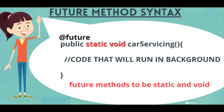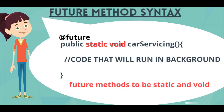You also need to define a future method with static void. All future methods have to be static void. Why void? Because as it runs in the future — meaning whenever resources are available — it cannot return any output to you at that point in time. That is the reason void is the return type.